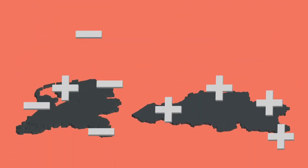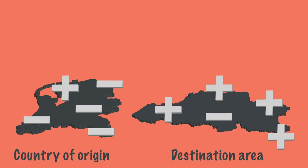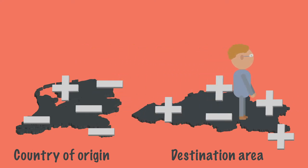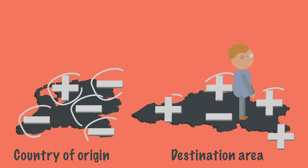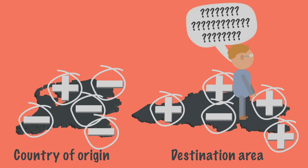In the push and pull factors model, the advantages and disadvantages of both the departure and destination region are described. A first point of criticism of the model is that it appears that migration is only a consequence of differences in characteristics between areas, without taking into account the way migrants choose their destination.